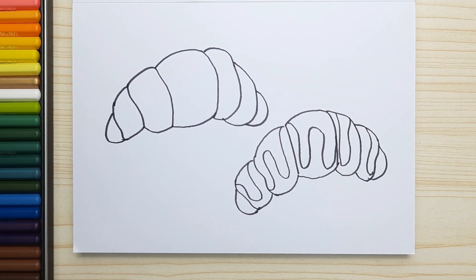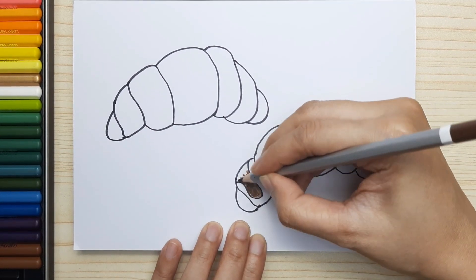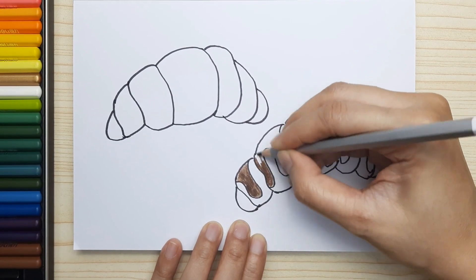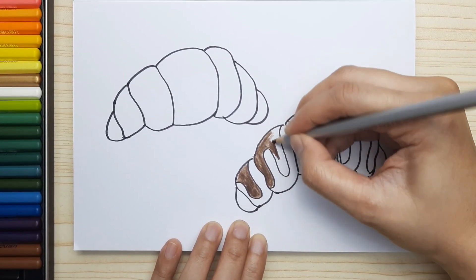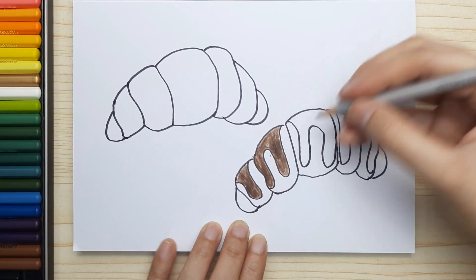And now let's color. This is how I color it. First, we color the topping chocolate with dark brown.